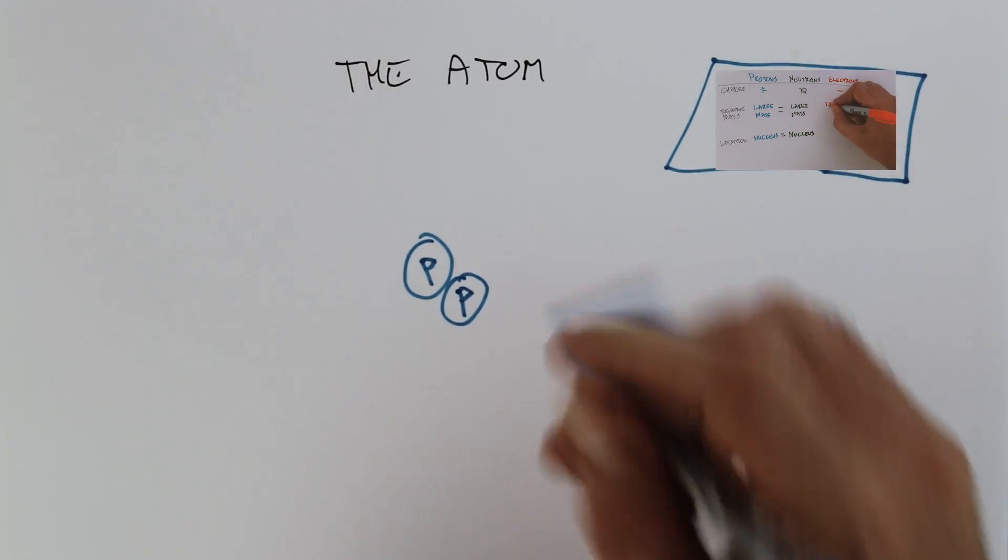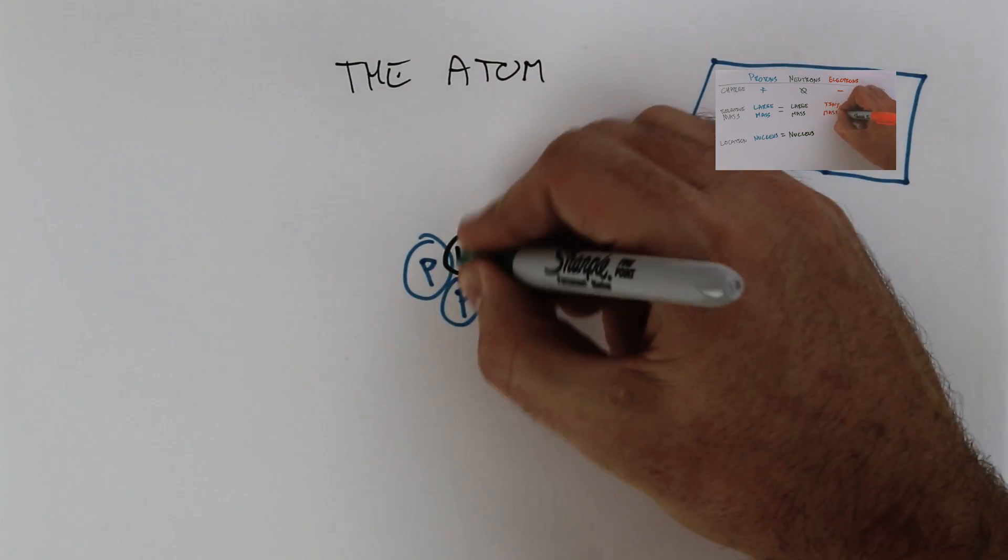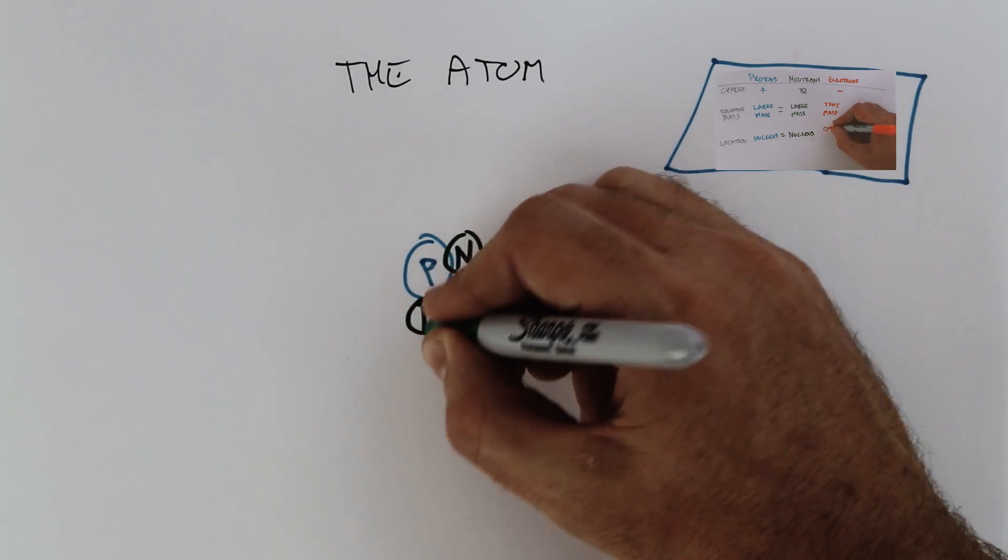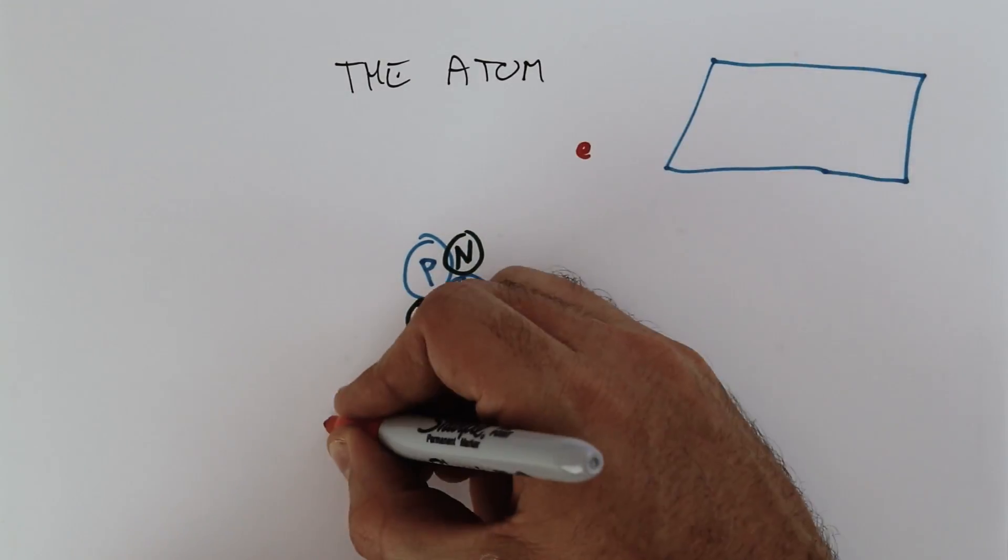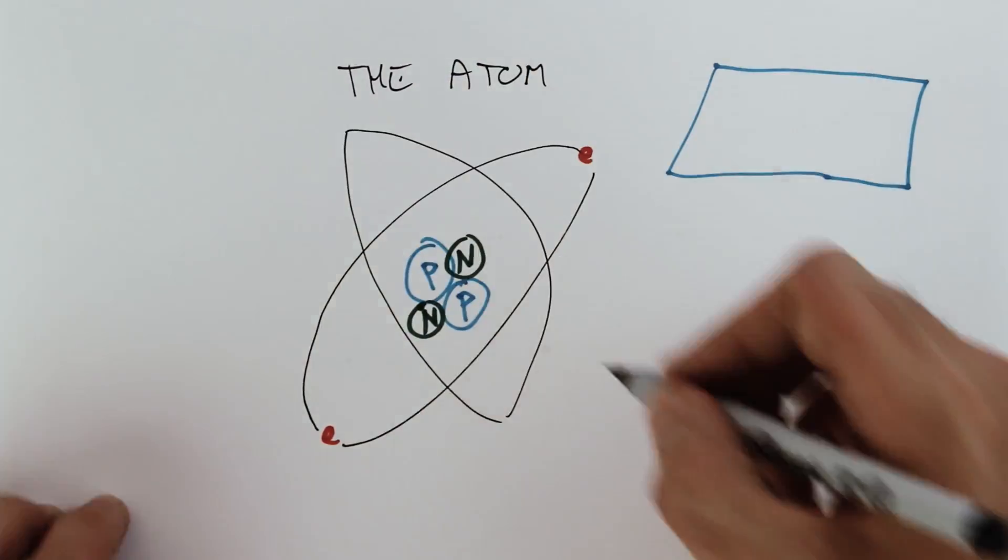So say you have two protons. You also have two neutrons, which we'll give an N. Around the outside you have these electrons. A couple things to note here.